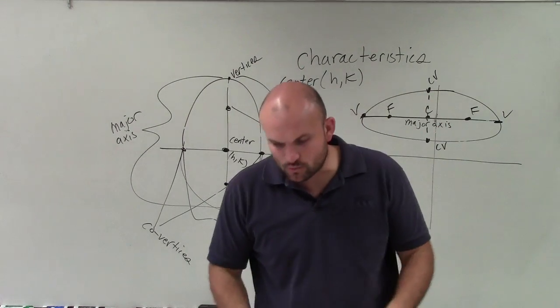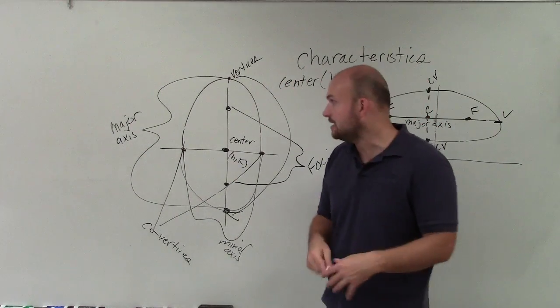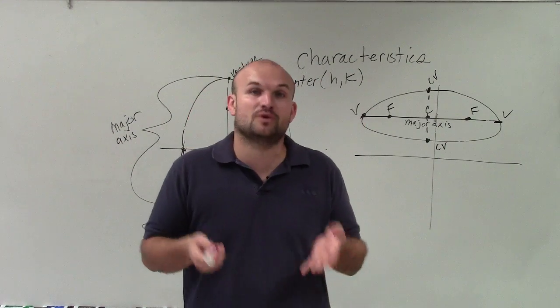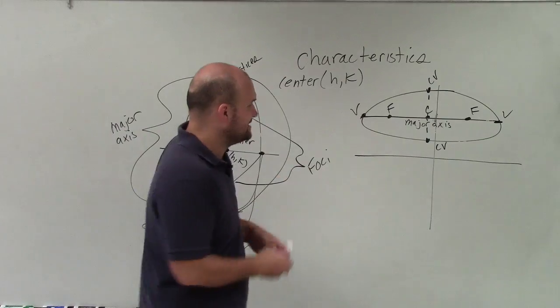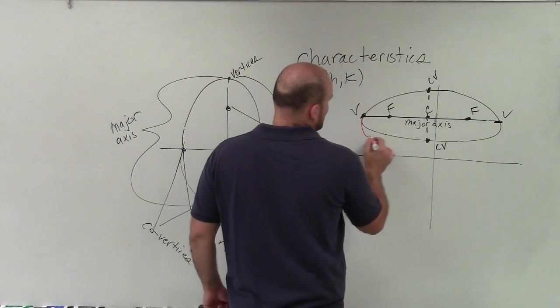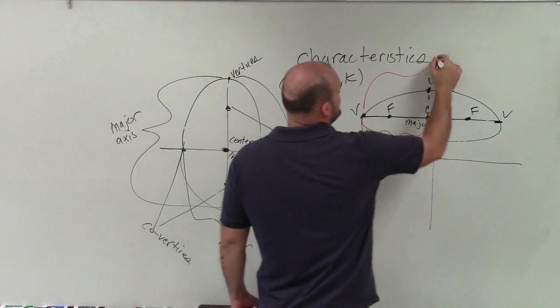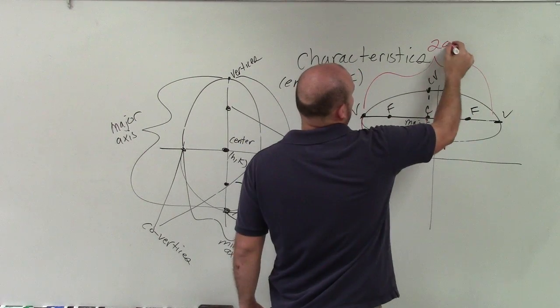Now, the characteristics, when we're graphing or writing the equation of an ellipse, we're going to be very interested in the value or the distance from the center to your vertices. So the center to my vertices is going to be a distance of a, where the major axis has a distance of 2a.